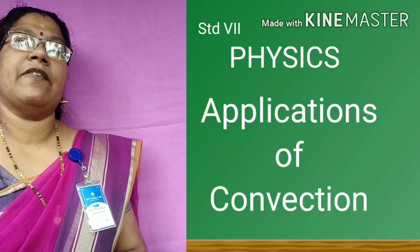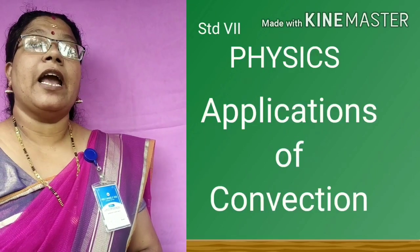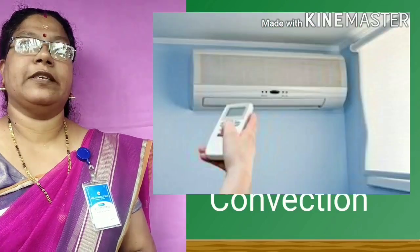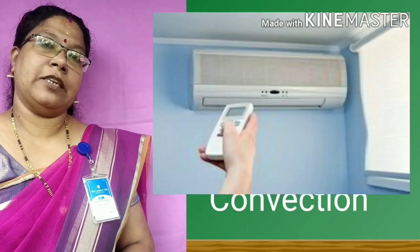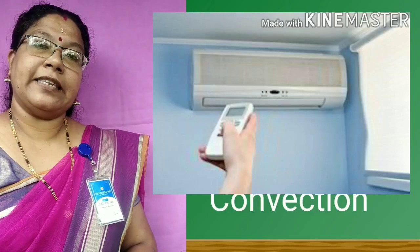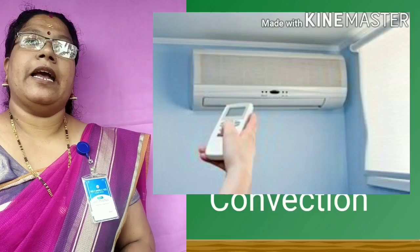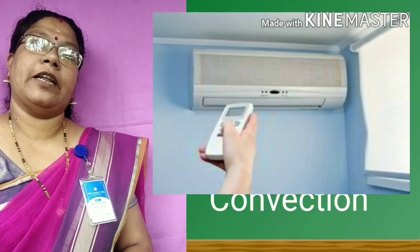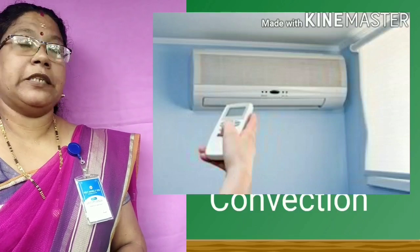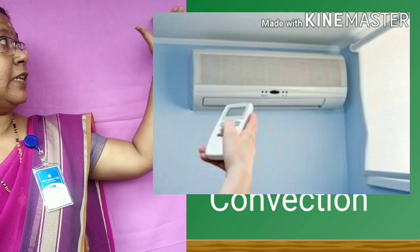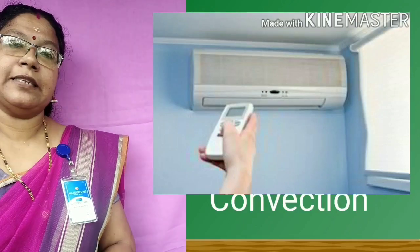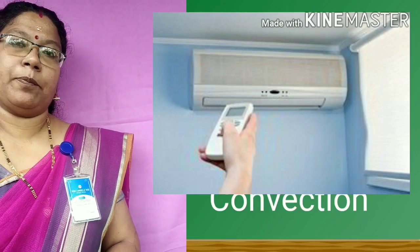The next application given in your textbook is that of an air conditioner, known in short as AC. AC is always placed on the roof or the top of the room, as you see in the figure. Why is the AC placed on the top?